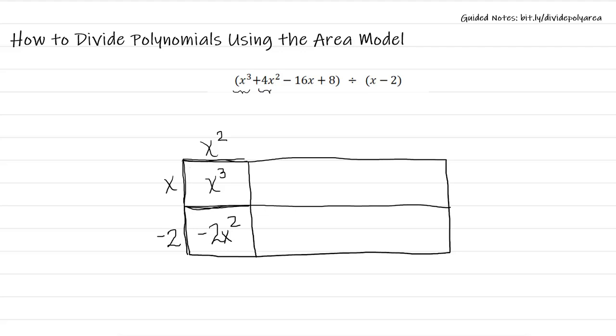I now have to think about this second term, this 4x squared. Well, my rectangle already has negative 2x squared. So I'm going to think again about partitioning this. And I'm going to use this rectangle to be a 6x squared. 6x squared plus a negative 2x squared is 4x squared.